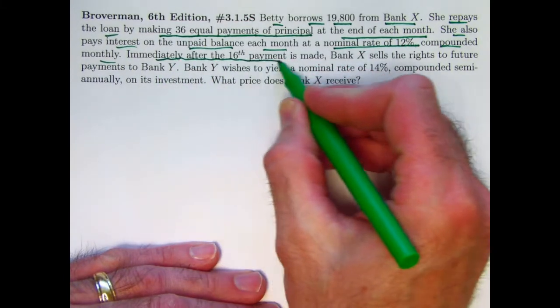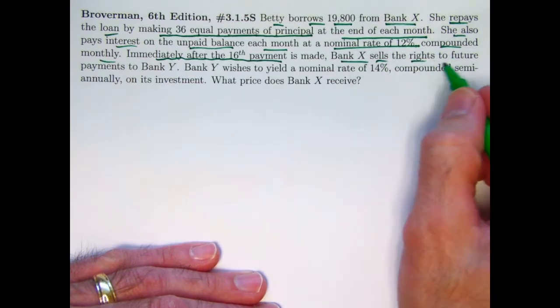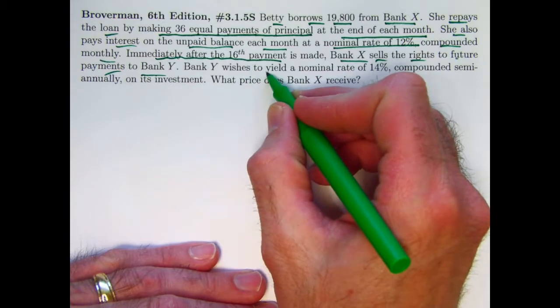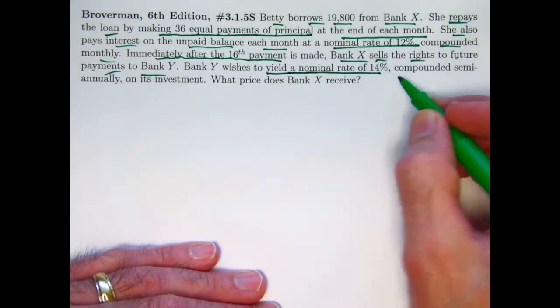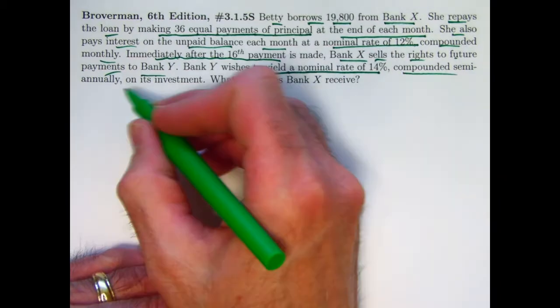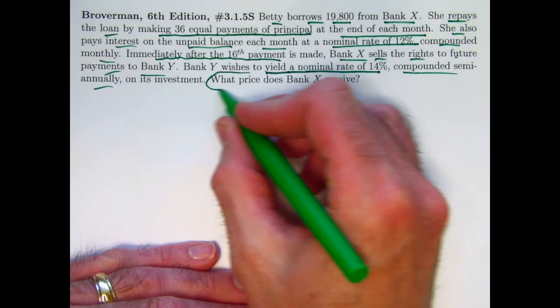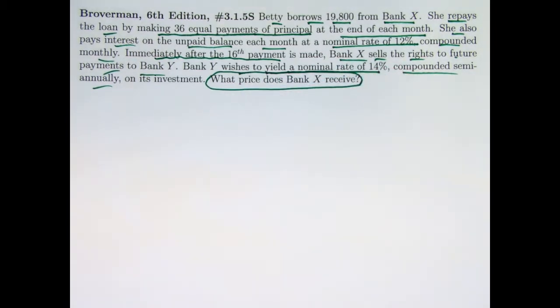So the payments overall do go down instead of staying level. Immediately after the 16th payment, Bank X sells the rights to future payments to Bank Y. But Bank Y wants to get a certain yield, a rate of return. They want to yield a nominal rate of 14%, here's a little wrinkle, compounded semi-annually. What price does Bank X receive? Or another way to say that is, what price does Bank Y pay?